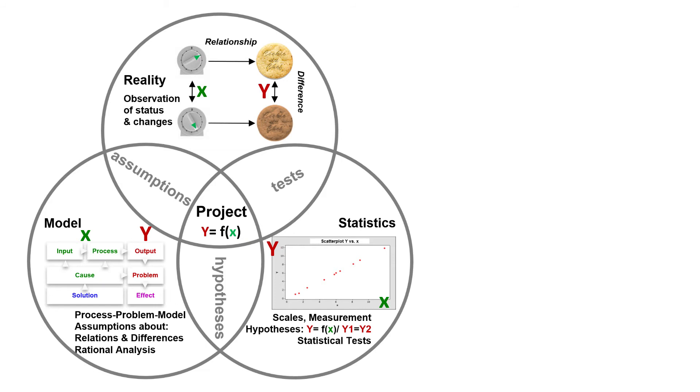X and Y, i.e. cause and problem, are observed in reality via differences and relationships. They are translated into the model as assumptions and operationalized as measurement variables.